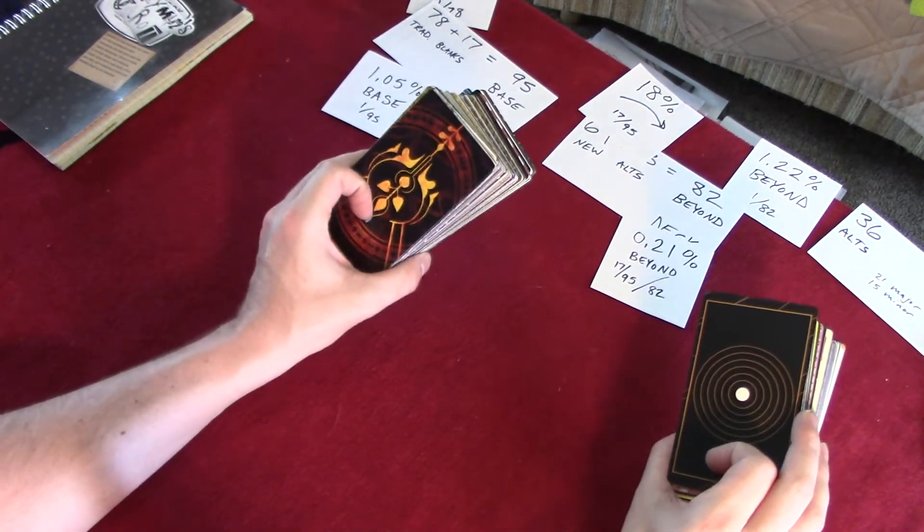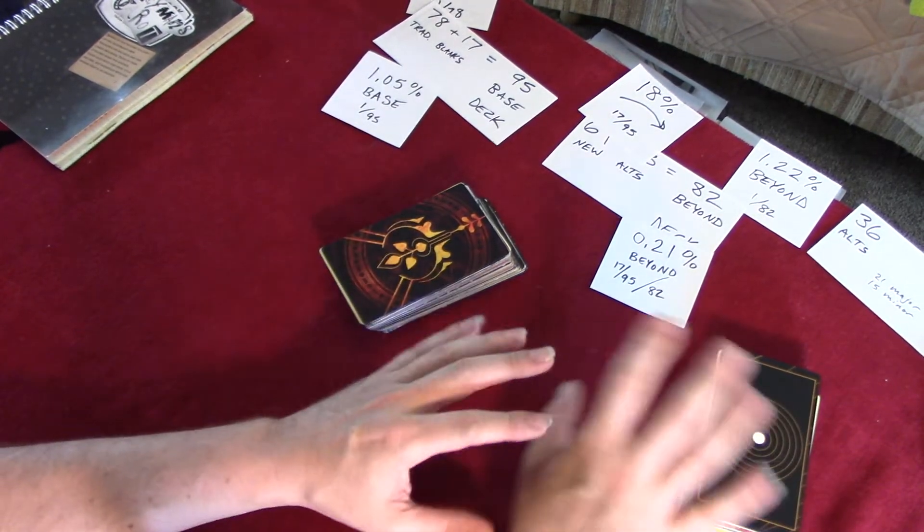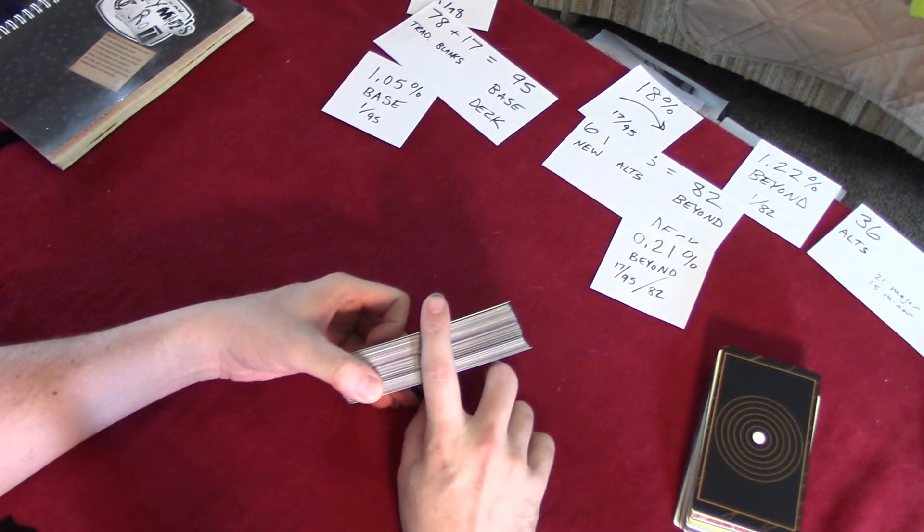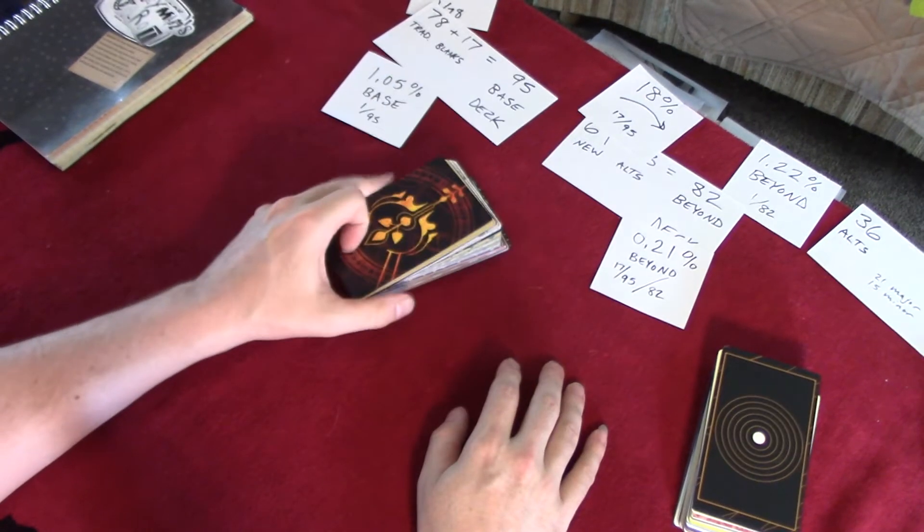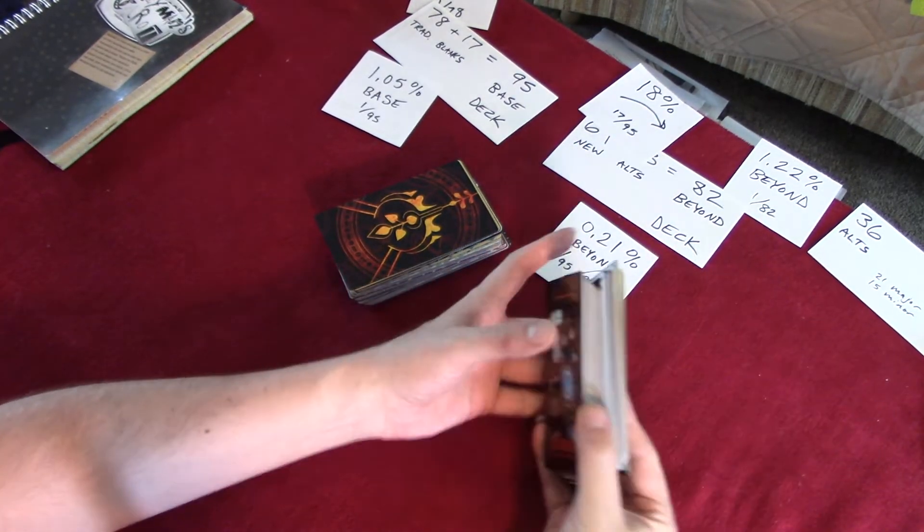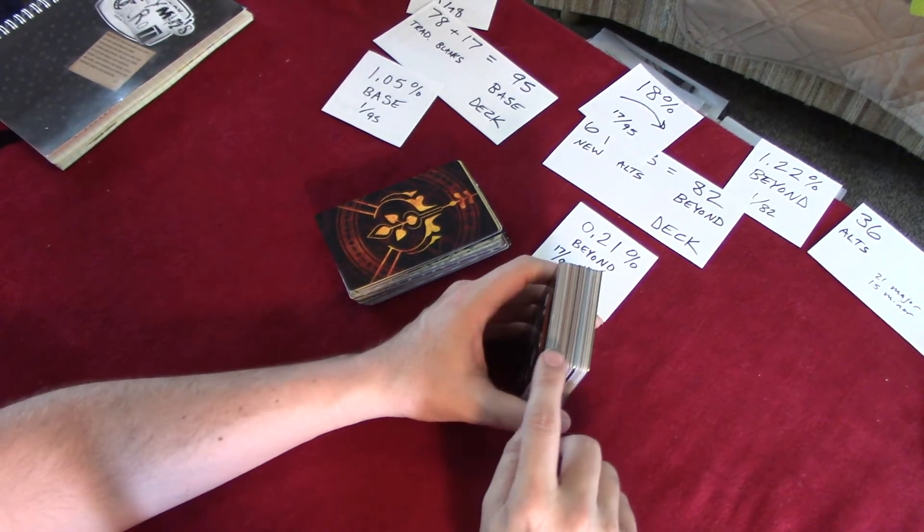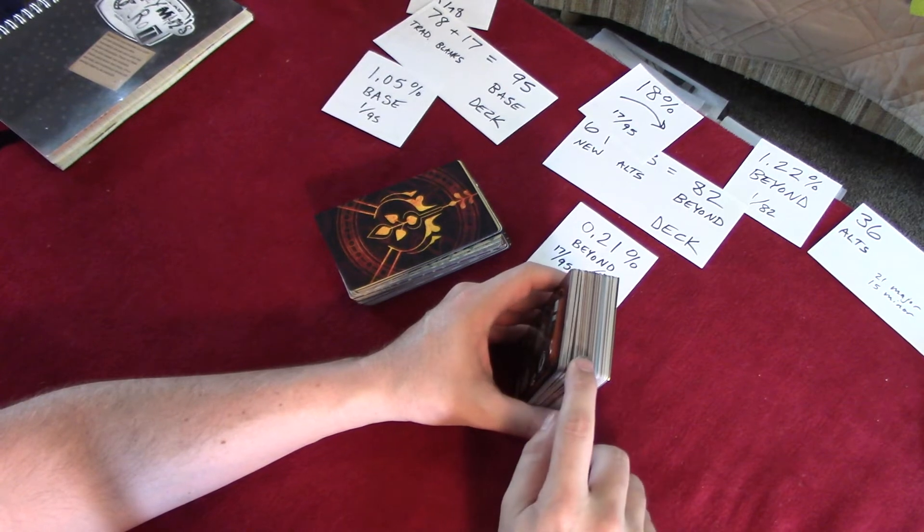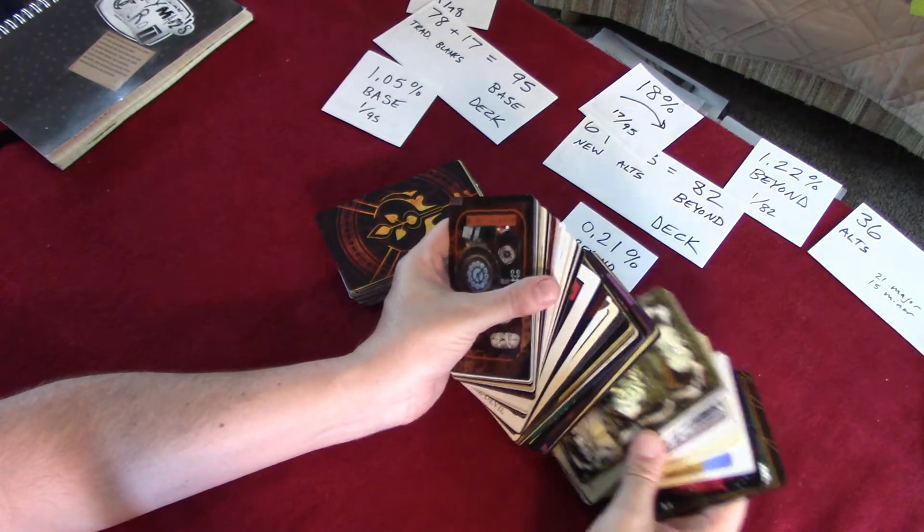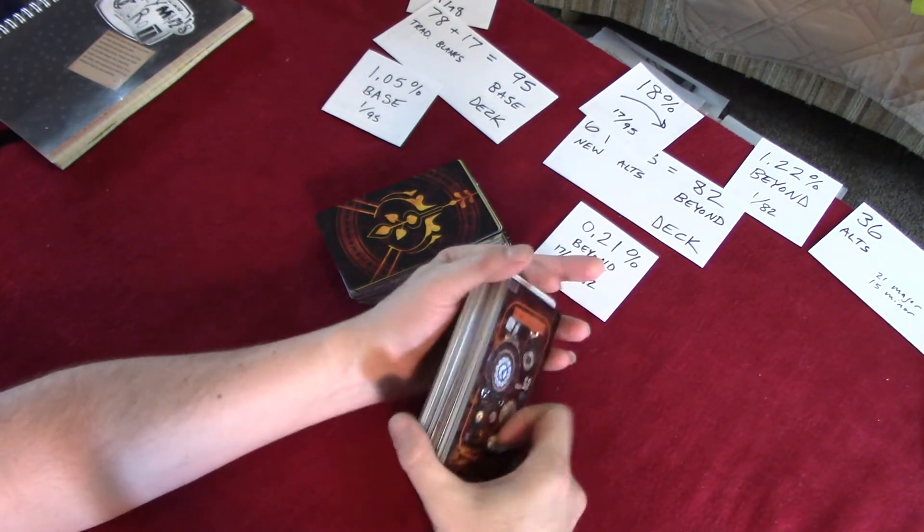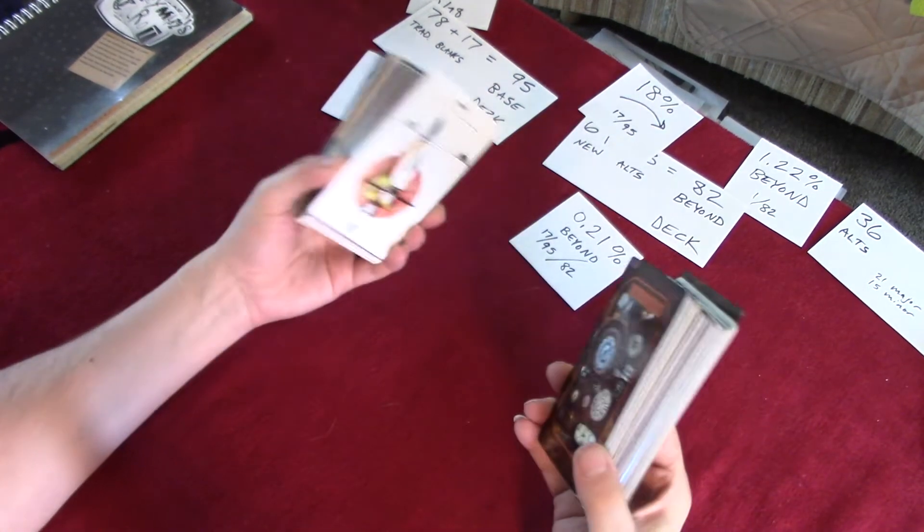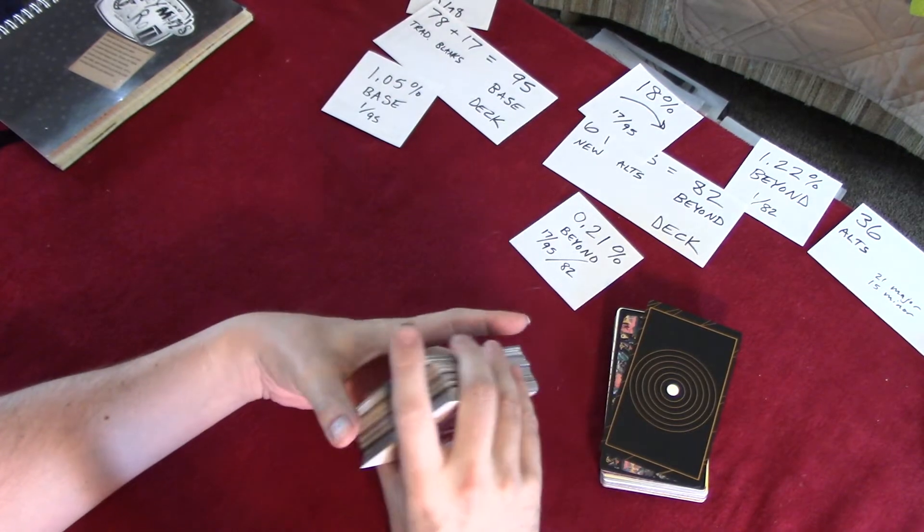But obviously here in divination, what you're controlling is the chance of it coming up. So again, I just really like the idea of keeping the odds high with a base deck of traditional tarot and then adding that beyond where all these stranger meanings, maybe more obscure meanings or less applicable, maybe just harder to wrap your head around or just slower because you got to look it up. Anyways, that is base blanks and beyond.